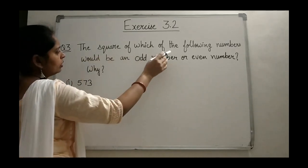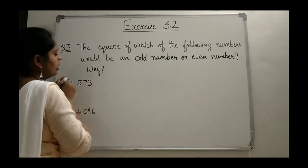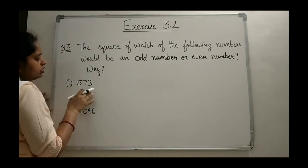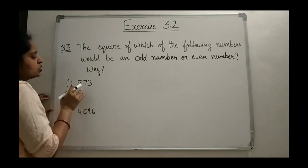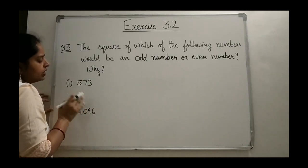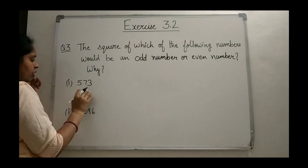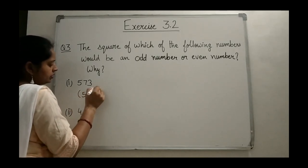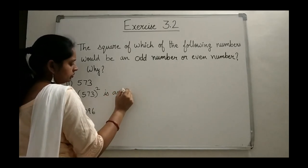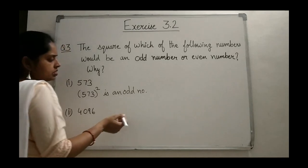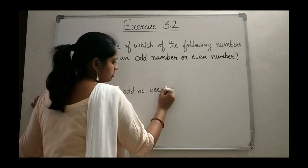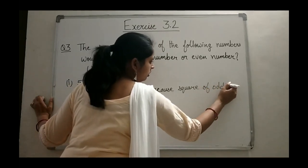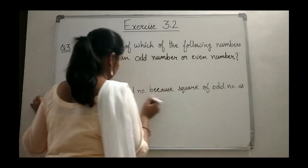See the third question: the square of which of the following numbers would be odd or even, and why? The first number is 573. This is obviously an odd number, and we have studied the property that the square of an odd number is odd. So the square of 573 is an odd number.